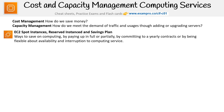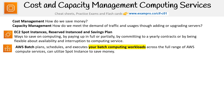The first are the different types of EC2 pricing models. You've got spot instances, reserved instances, and saving plans. These are ways to save on computing by paying in full or partially, or by committing to a yearly or multi-year contract, or by being flexible about availability interruption to computing services. We also have AWS Batch, which schedules and executes batch compute workloads across the full range of AWS computing services, and can utilize spot instances to save money.